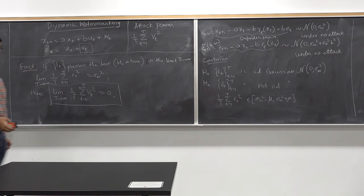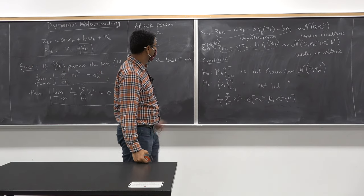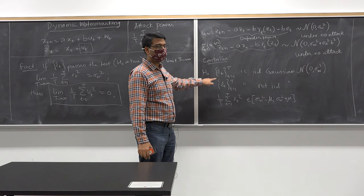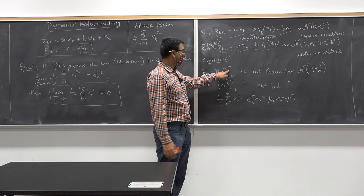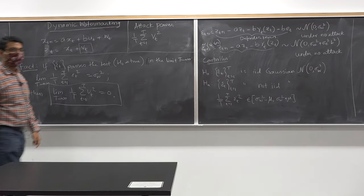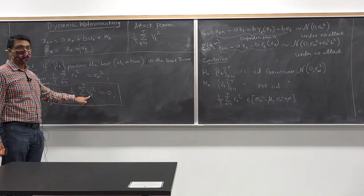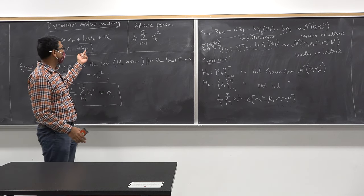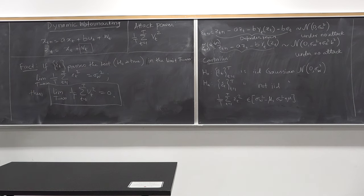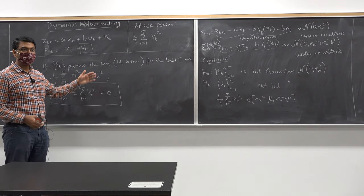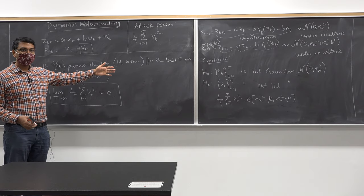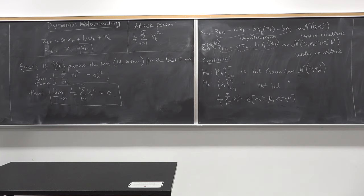If H_0 is true, does that mean there is no attack? Yes, with high probability — because you have a finite number of data points. Can we monitor the attack power directly? No. The controller cannot observe v_t at all. All this result is saying is: if you have a persistent attacker, you will detect it in the limit. That limit could be 100 time steps or 1,000 time steps — it depends on the problem. You will be able to detect a persistent attacker using dynamic watermarking. Taking the contrapositive: if average attack power is greater than zero, then the test condition will not hold, so eventually you will detect the attack.